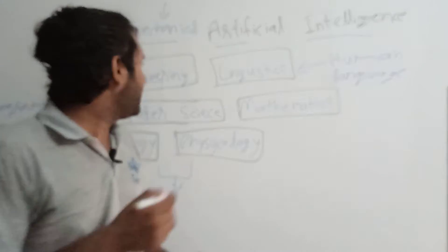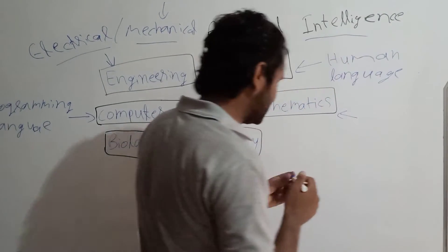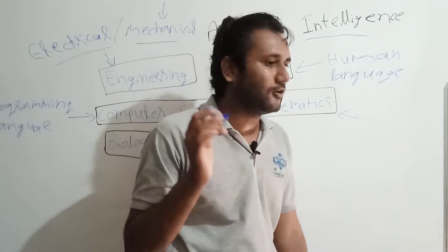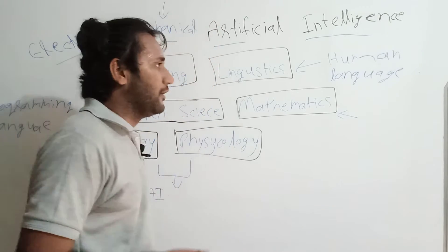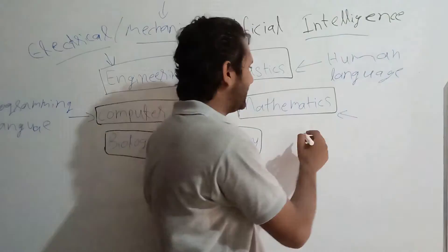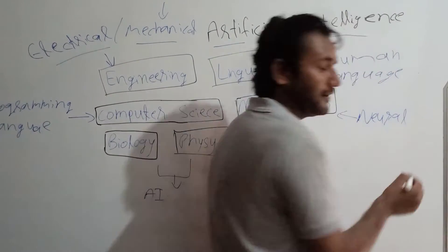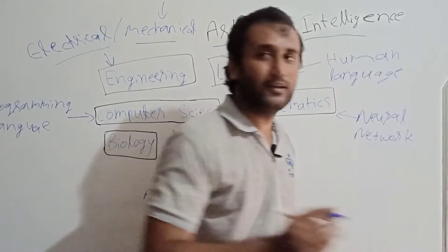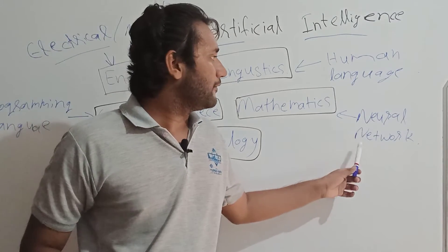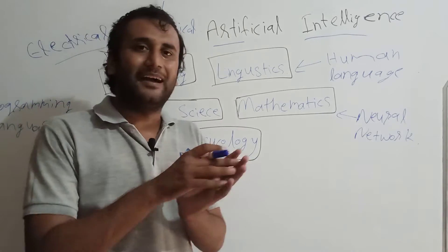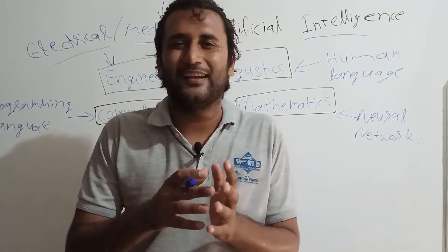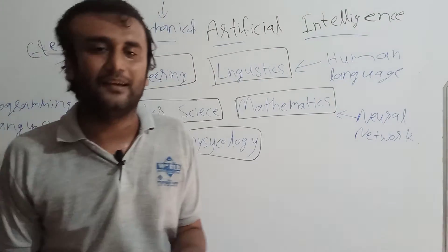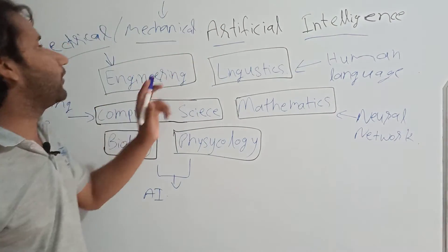Now let me explain the role of mathematics. Whenever we create an artificial intelligence program, we have to program it logically. Mathematics is applied in areas like neural networks. I will explain neural networks in more detail later, as it is a deep topic. Mathematics is used to create neural networks and many mathematical models of AI, because designing AI requires logical, mathematical foundations — a lot of mathematics, engineering, computer science, and combination of biology and psychology.